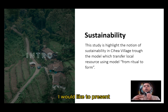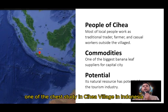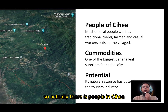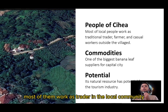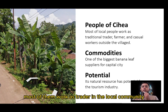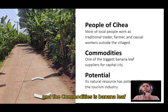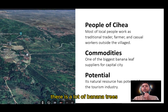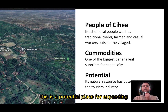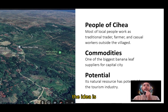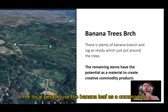I would like to present one of the case studies in CHI village in Indonesia. There are people in CHI, most of them work as traders in the local community, and the community is centered around banana trees. There are a lot of banana trees, making this a potential place for developing a tourism resort. The local people use the banana leaf as a commodity.